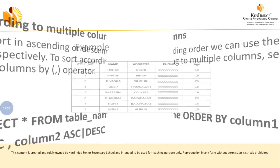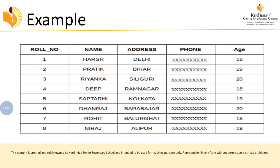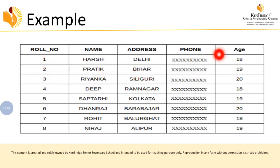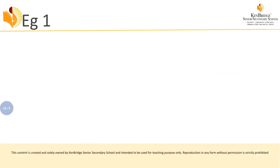Let's see some examples — that will make it easier to understand. Here is an example database with a table that has five attributes: roll number, name, address, phone, and age. Let's see what queries we can run on this sample data.